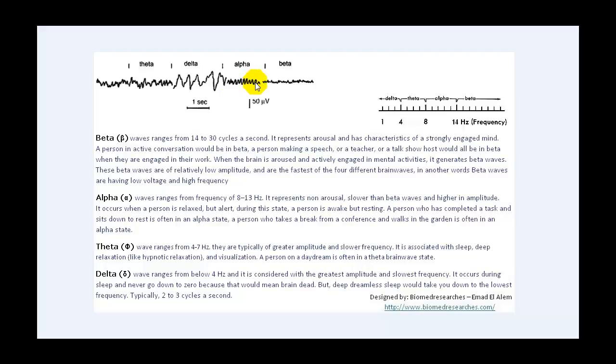If we count 12 cycles within one second, it falls into the alpha category. That is the way we calculate it — the distance between the two lines is one second.